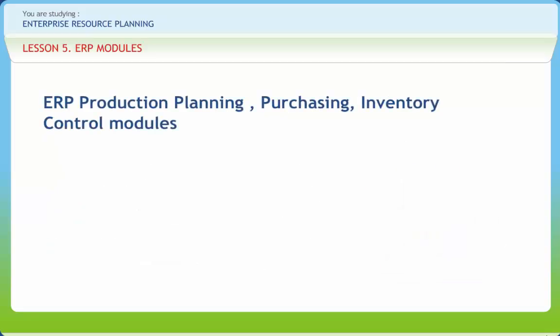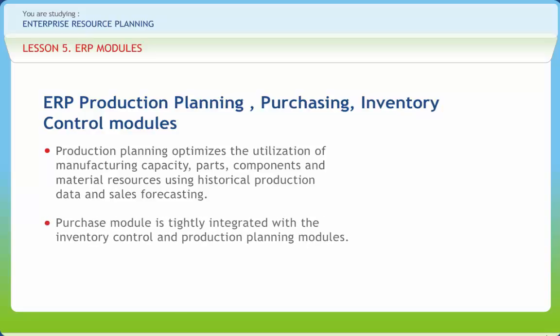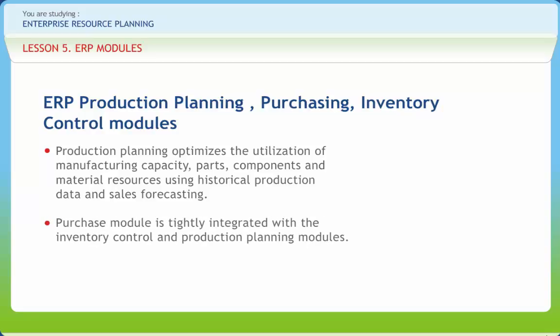In the process of evolution of Manufacturing Requirements Planning into ERP, vendors have developed more robust software for production planning, and consulting firms have accumulated vast knowledge of implementing the production planning module. Production planning optimizes the utilization of manufacturing capacity, parts, components, and material resources using historical production data and sales forecasting. Purchase modules streamline procurement of required raw materials. They automate the processes of identifying potential suppliers, negotiating price, awarding purchase orders to the supplier, and billing processes. The purchase module is tightly integrated with the inventory control and production planning modules.